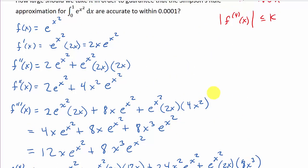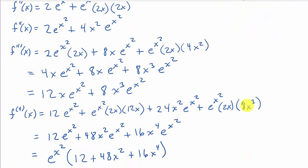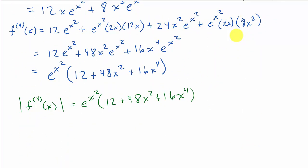The absolute value of the fourth derivative equals e to the x squared times (12 plus 48x squared plus 16x to the fourth), where x is between 0 and 1. You might wonder why I didn't write absolute value signs — because for all x values from 0 to 1, this expression is always positive, so we don't need them.